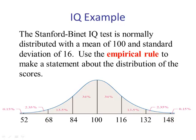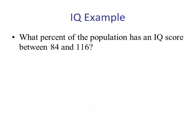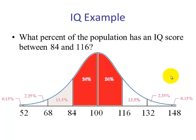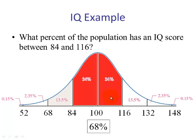Now let's look at some problems. What percent of the population has an IQ score between 84 and 116? Always a good idea to draw the picture. It turns out 84 and 116 is one standard deviation below and one above the mean. So we know, by the empirical rule, this is 68%. So that's our answer.